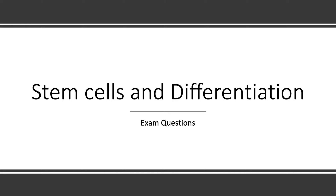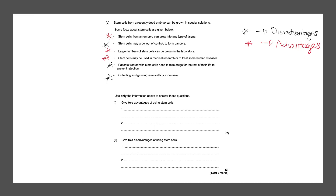Most of the questions you get with stem cells will be a list question, and it's just using information given to list advantages and disadvantages of stem cell research. We're given some facts and we have to give two advantages and two disadvantages of each. I've labeled the advantages in red and the disadvantages in black.